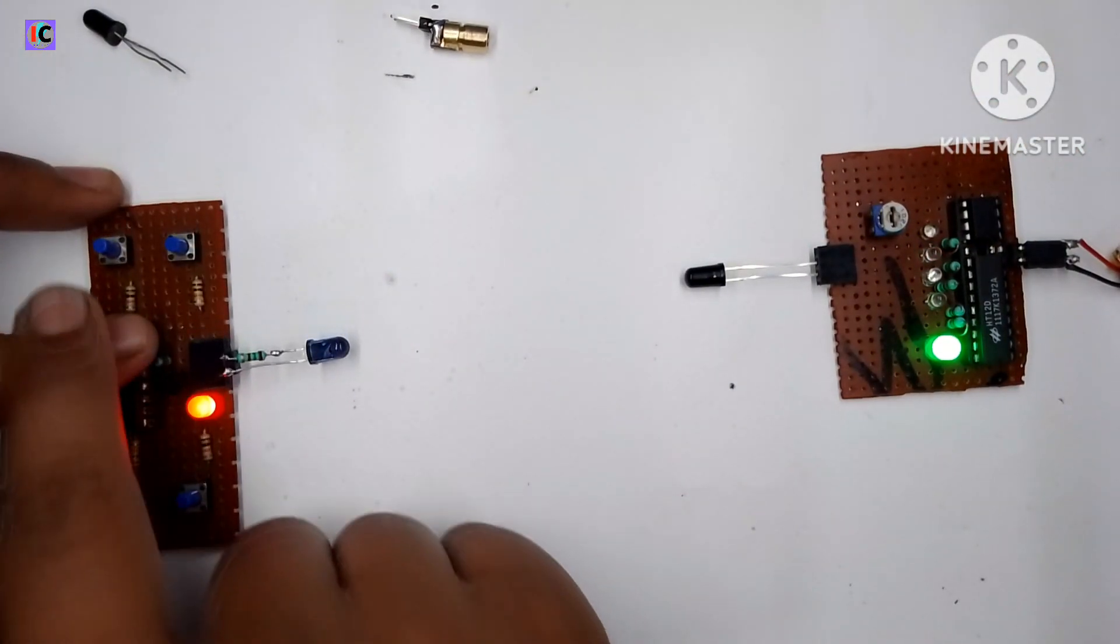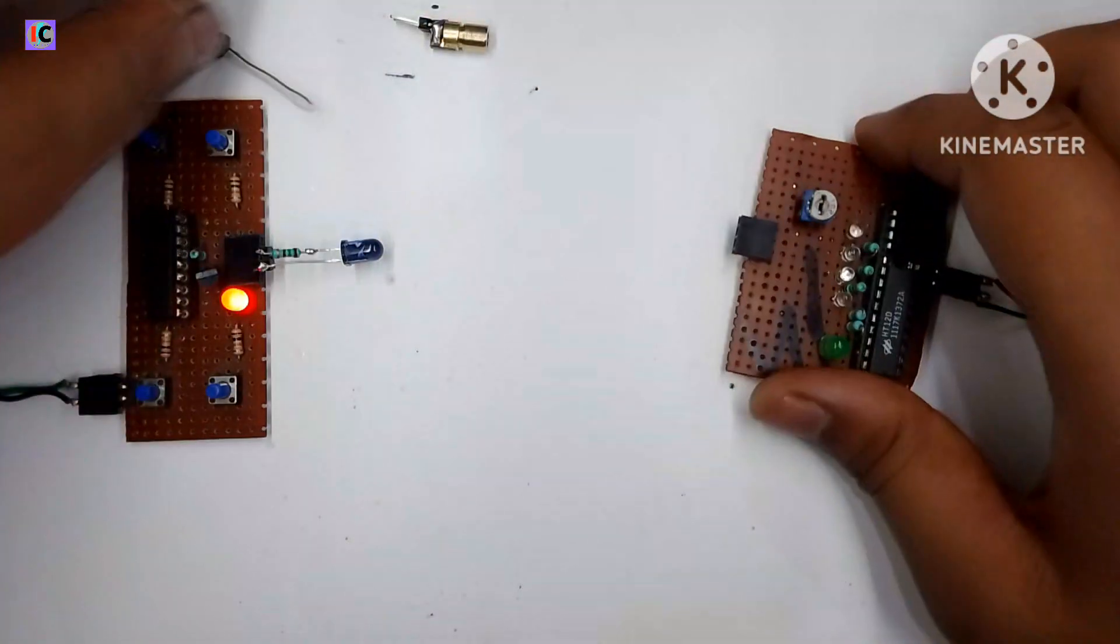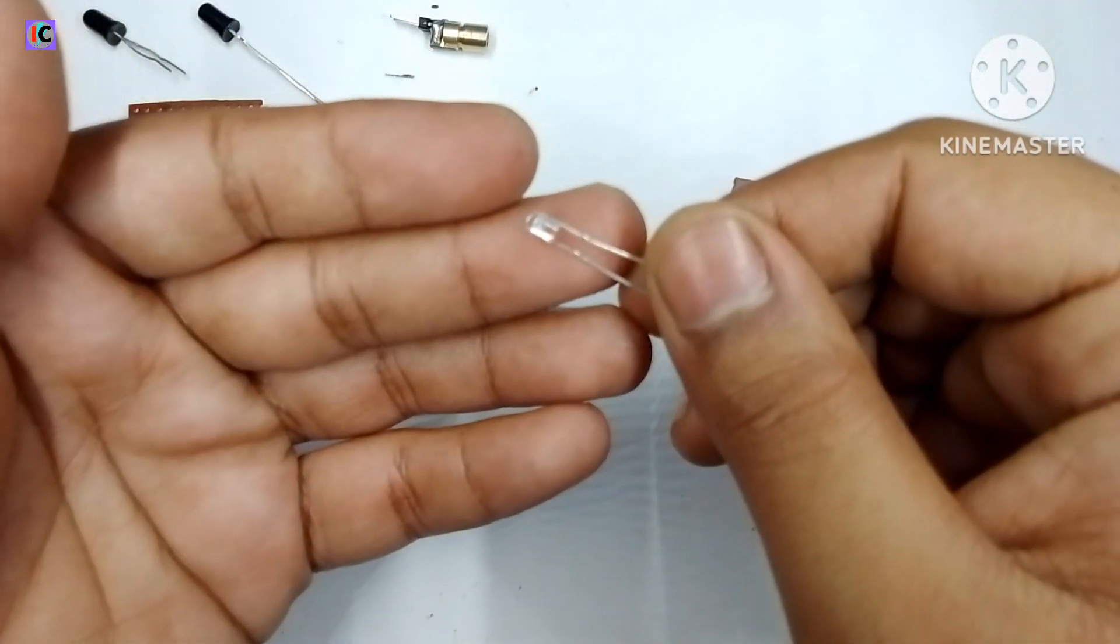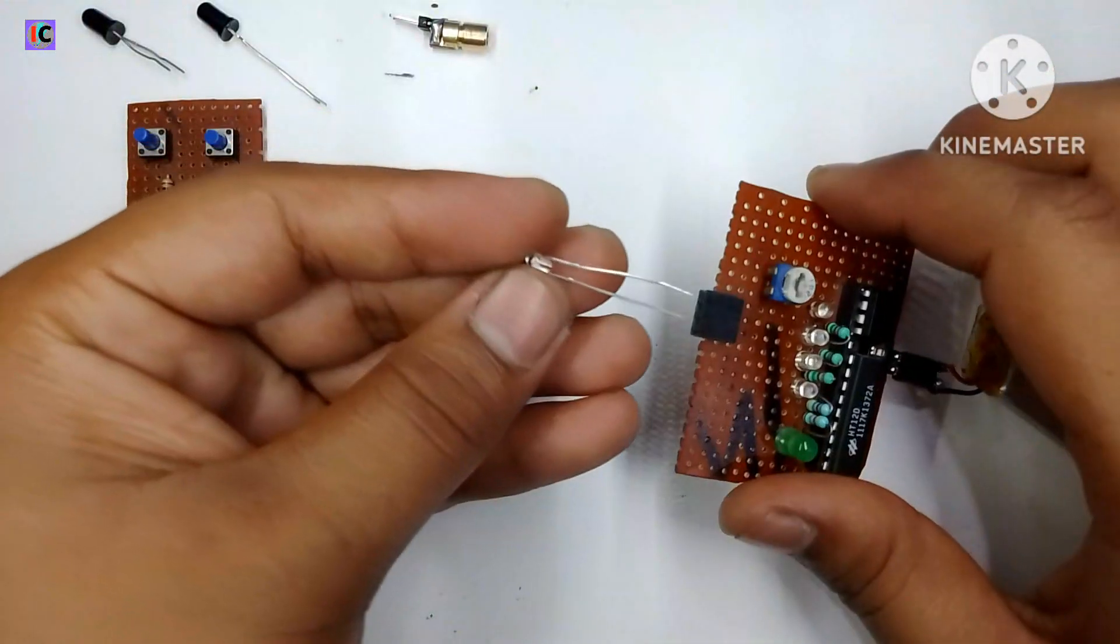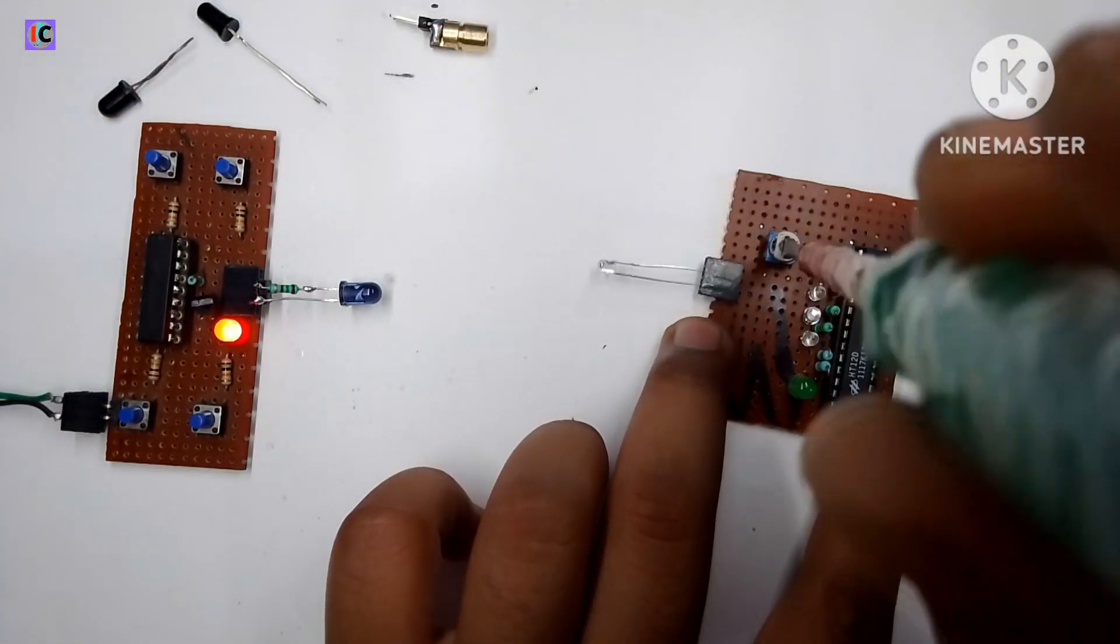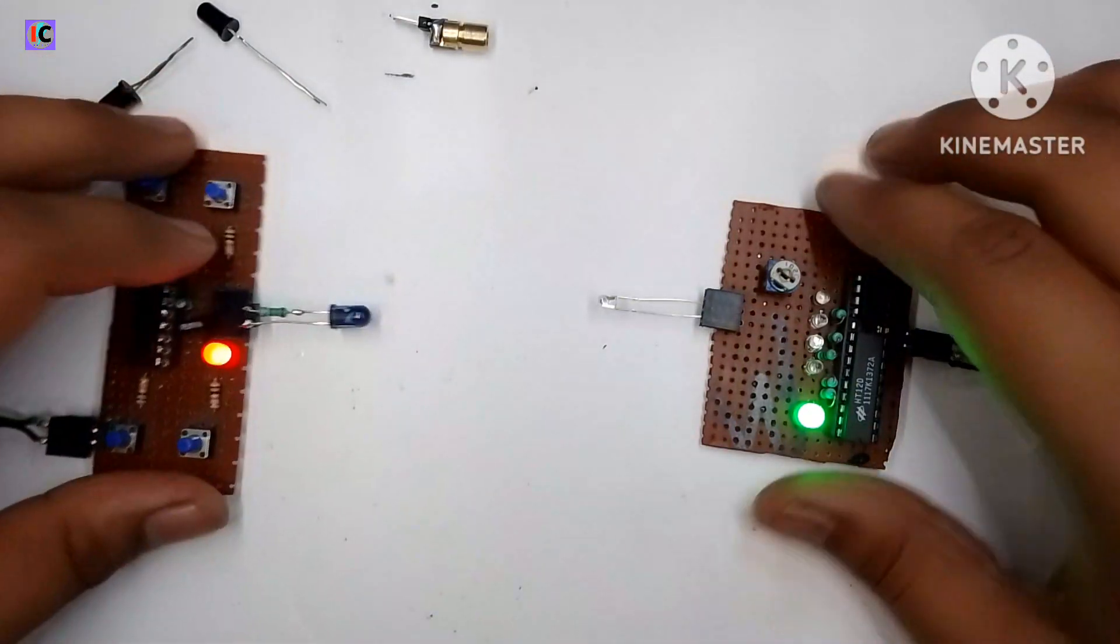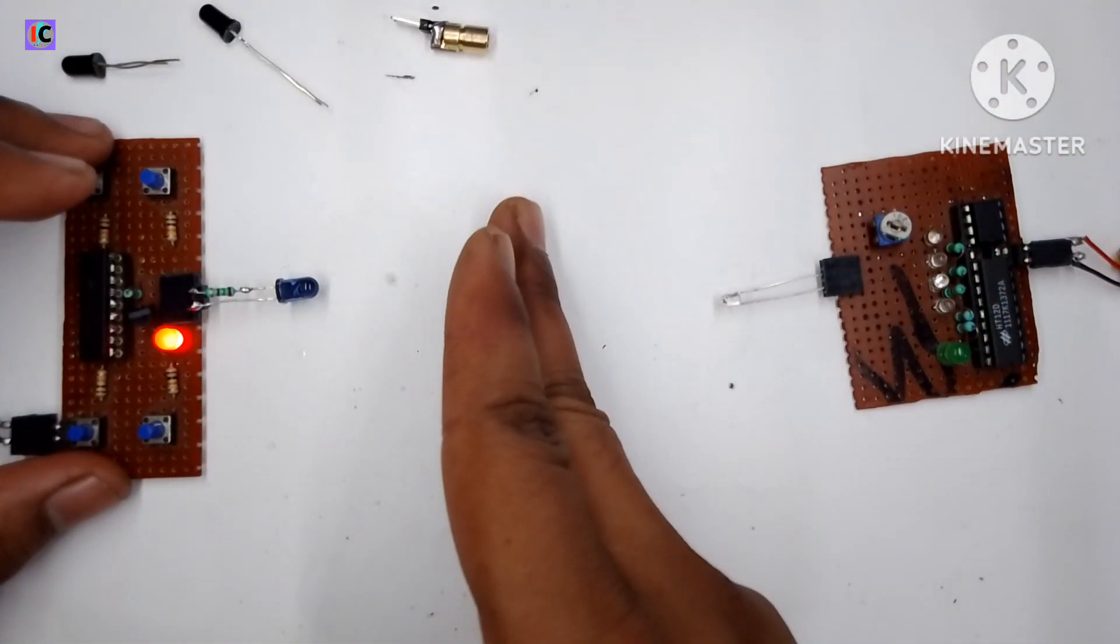Now here I have connected the photo diode. It's working for both IR LED and for the laser. Also this kind of transparent type photo diode is also working with both kinds of laser and IR LED.